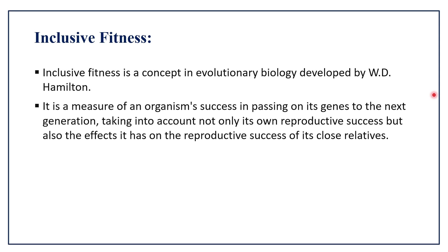Inclusive fitness is a measure of an organism's success in passing on its genes to the next generation, taking into account not only its own reproductive success but also the effects it has on the reproductive success of its close relatives. It means it's not only about passing your genes to the next generation by yourself, but also by helping those close relatives who can pass the same genes to the next generation. In that way, the genes can be secured in the next generation, and you can call it natural selection, survival, or reproductive success.